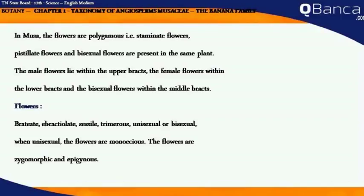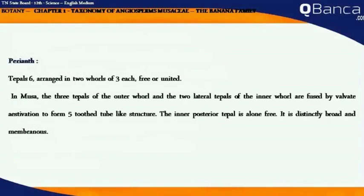Flowers: Bracteate, ebracteolate, sessile, trimerous, unisexual or bisexual. When unisexual, the flowers are monoecious. The flowers are zygomorphic and epigynous. Perianth: Tepals 6, arranged in two whorls of three each.